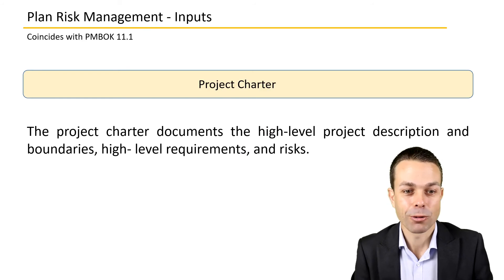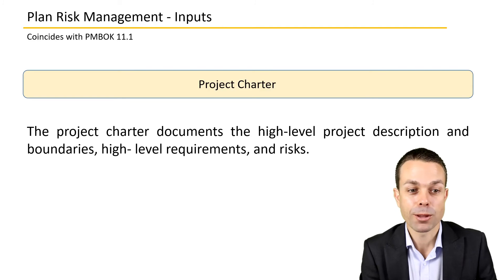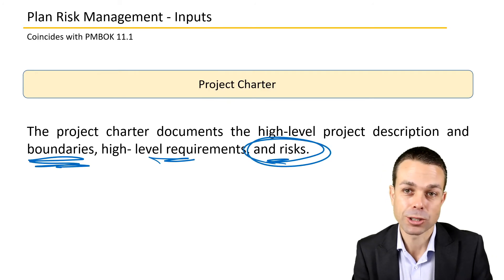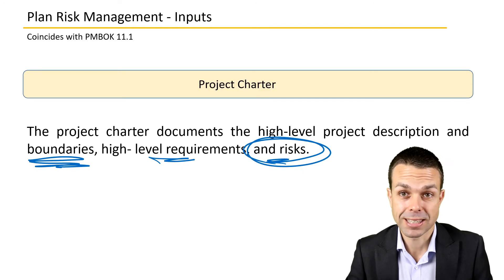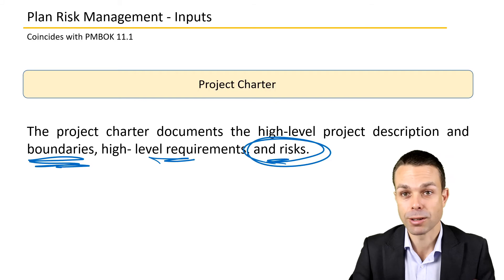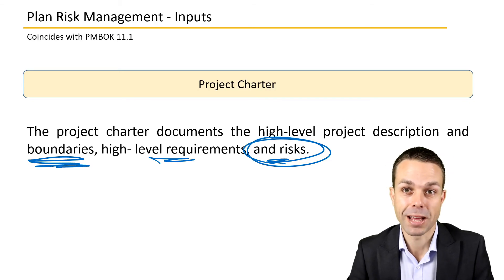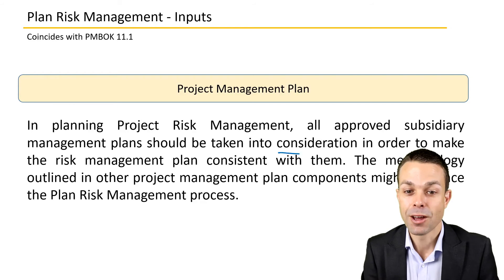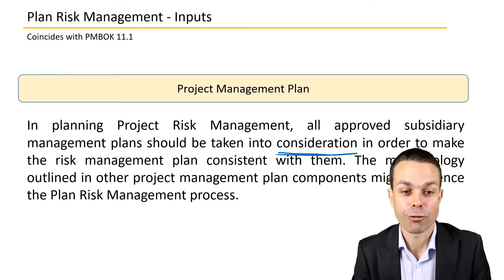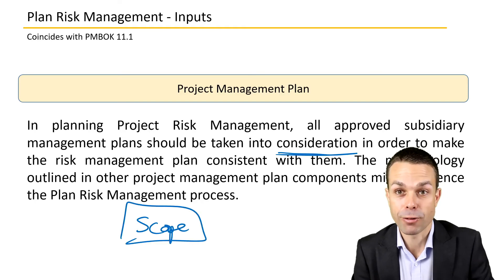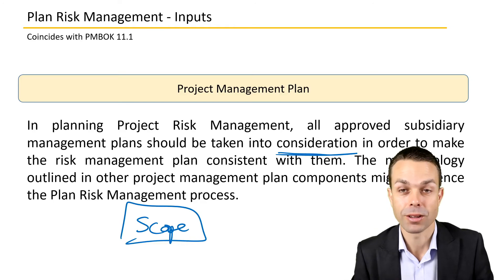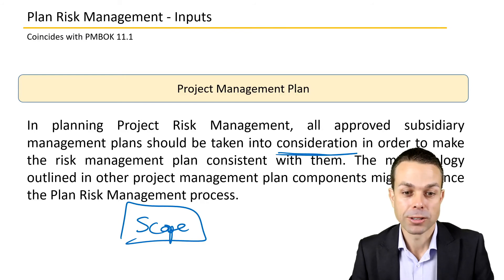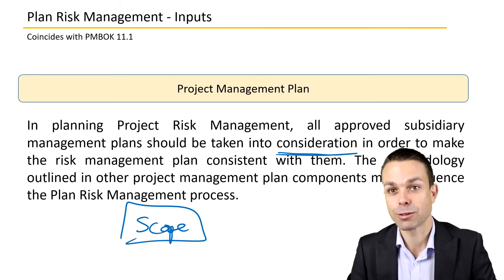Looking at the inputs in more detail: the project charter provides the high-level project description, boundaries, high-level requirements, and high-level risks. In the project charter we should have already called out a brief view of what risks we see coming up, which gives us a nice input into where we should be focusing our risk activities. For the project management plan, all approved subsidiary management plans should be taken into consideration, because risk can come from any place — from the scope, maybe we're designing in a way that invites more risk, or from quality through defects. We need to be aware of all of those things and managing risk from all of those perspectives.